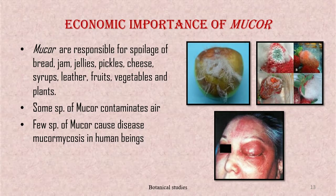Economic importance of Mucor: Mucor is responsible for spoilage of bread, jam, jellies, pickles, cheese, syrups, leather, fruits, vegetables, and plants. Some species of Mucor contaminate air. A few species of Mucor cause the disease mucormycosis in human beings.